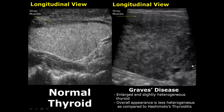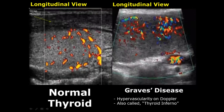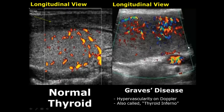Graves disease on Doppler can also give hypervascularity, that is thyroid inferno. But it is more common in Hashimoto's thyroiditis.